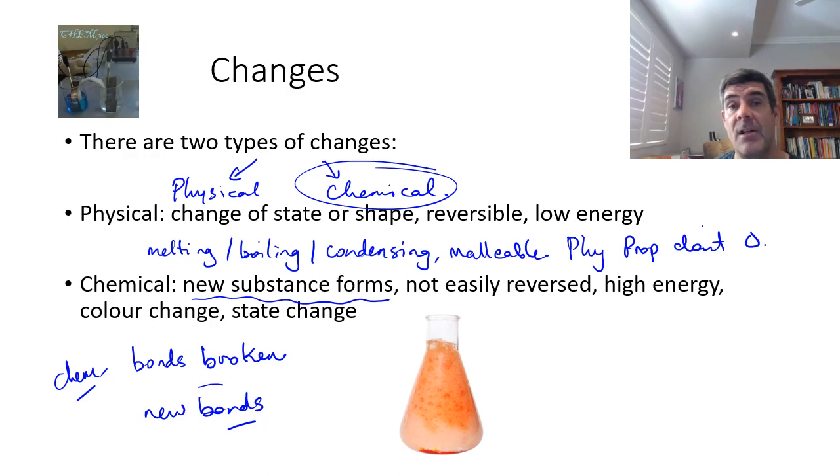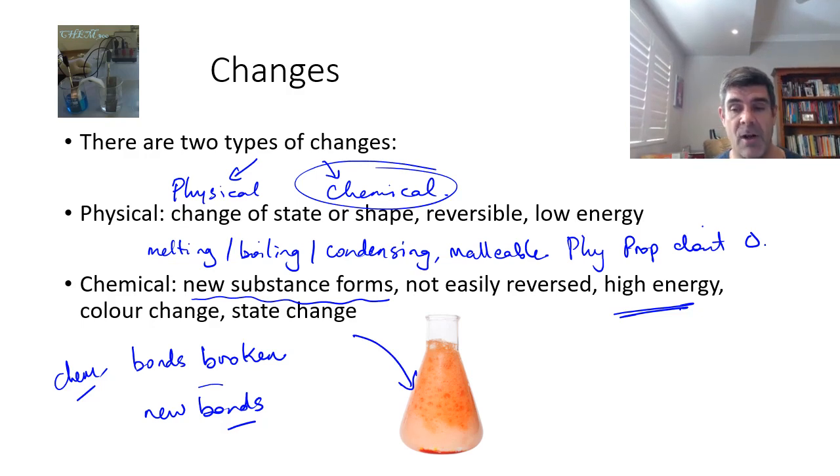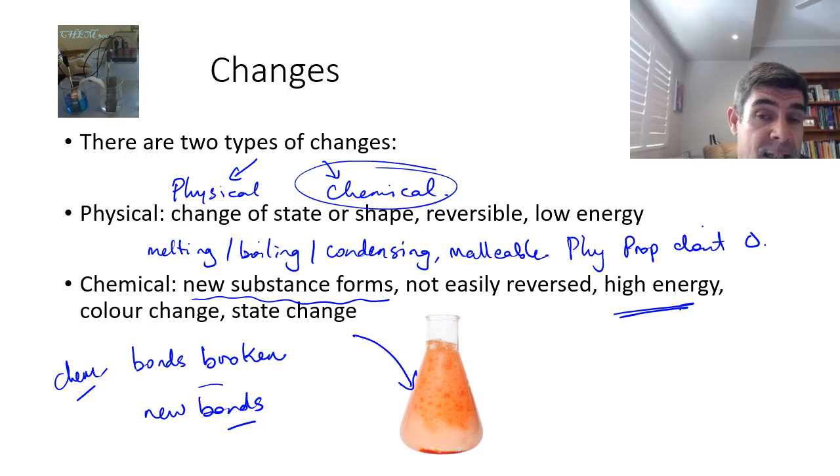These chemical changes are not easily reversed. They tend to require a much higher energy input and they can be associated with color change or state changes. You can see the kind of little fizzing that's going on here. Production of those bubbles are indicative of a gas. They don't tell us what gas it is. We must test for that gas.